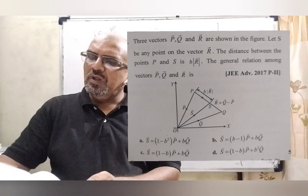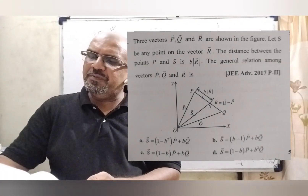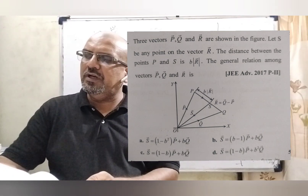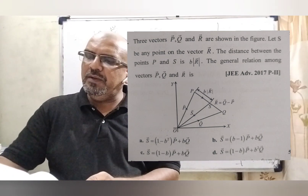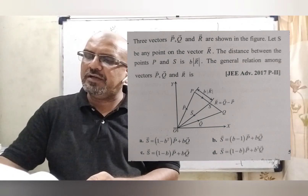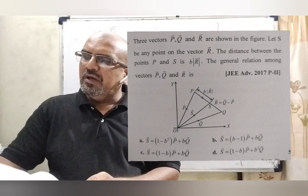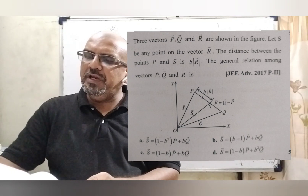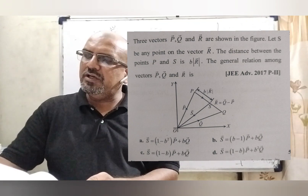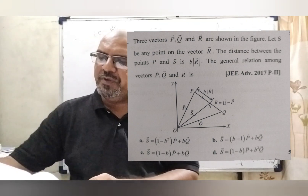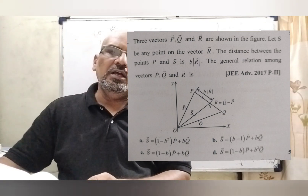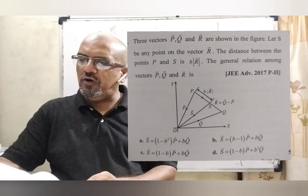Now, here is the question. Three vectors — P vector, Q vector, and R vector — are shown in the figure. Let S be any point on the vector R. The distance between the points P and S is B into the magnitude of R vector. The general relation among vectors P, Q, and R is — here we have given four options.